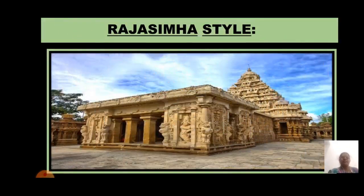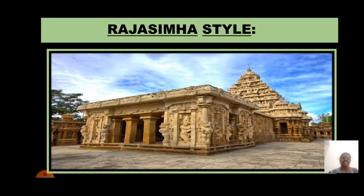Next is the Rajasimha style. Narasimhavarman II, also known as Rajasimha, constructed structural temples using stone blocks. The best example of this structural temple style is the Kailasanatha temple at Kanchipuram. This temple was built using sandstones, and the Kailasanatha temple is also called Rajasimhesvaram.